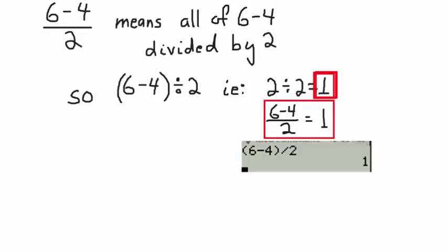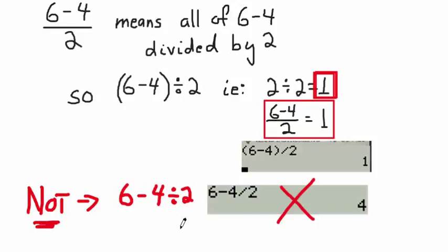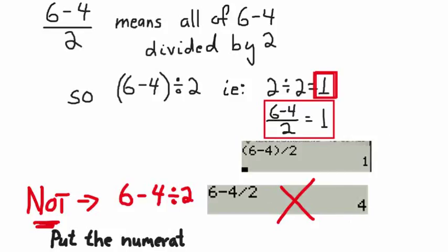I'll even put it on a calculator for you. Notice that when you enter it into the calculator, you have to tell it that the entire top is 6 minus 4. If you don't tell the calculator that the entire top is 6 minus 4 and you type it in without the brackets, you get the wrong answer — only the 4 gets divided by the 2, because division is done first. When you use brackets properly, you get the correct answer.